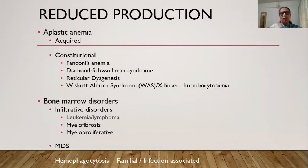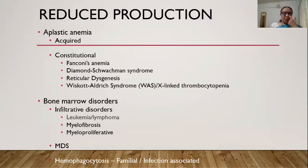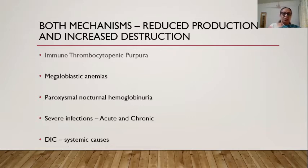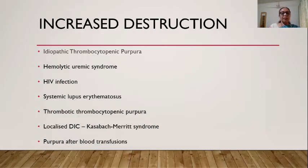Bone marrow infiltrative disorders include leukemia, lymphoma, myelofibrosis, and MDS. Importantly, do not forget HLH — familial or infection-associated — which can lead to thrombocytopenia through both reduced production and increased destruction. Megaloblastic anemias, PNH, and severe infections both acute and chronic can also involve both mechanisms.